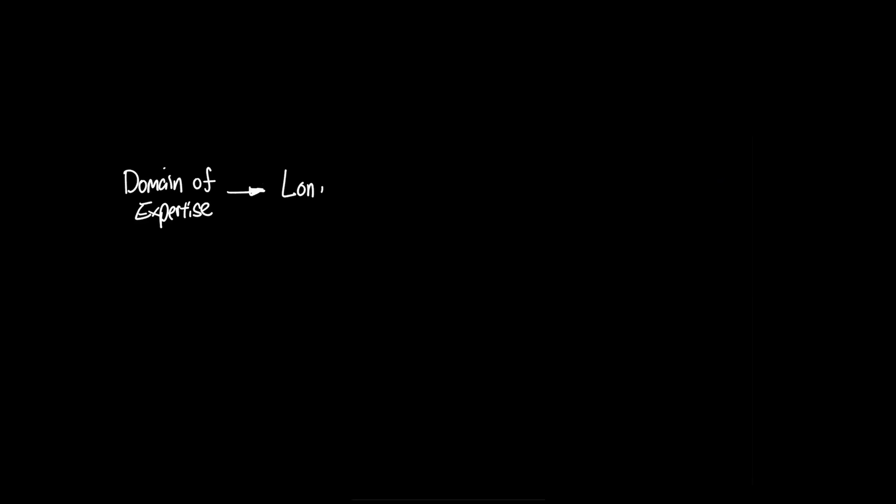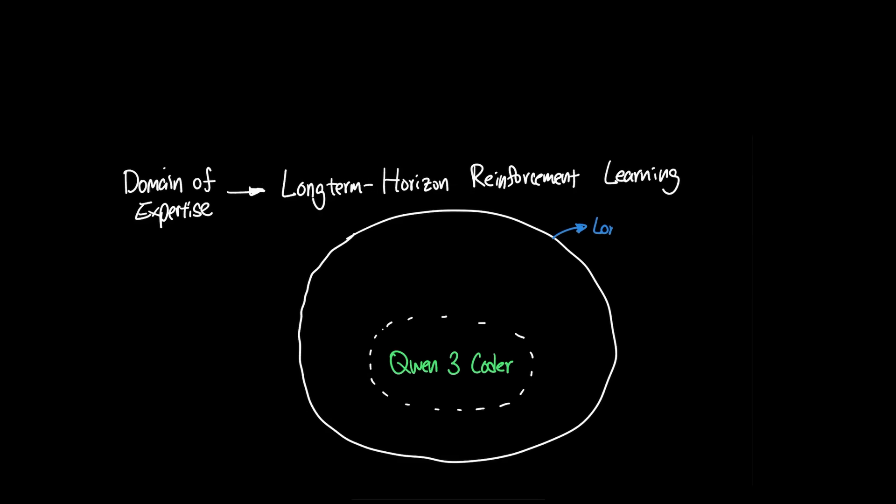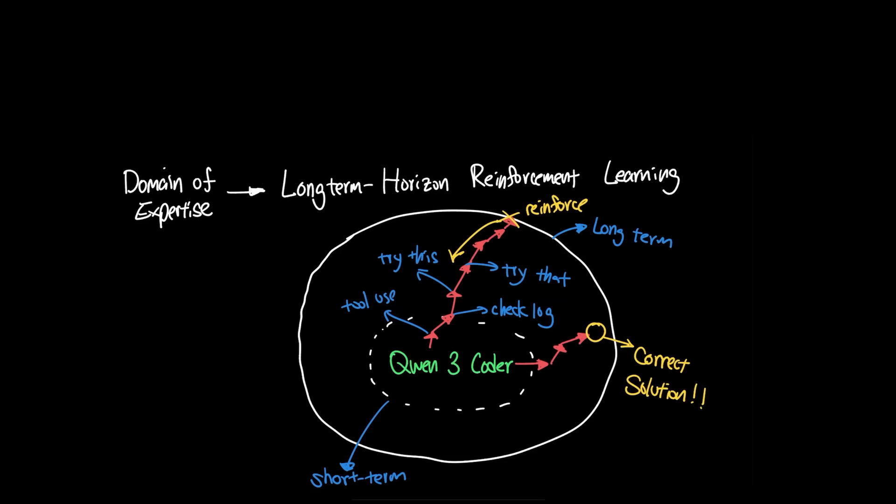Alibaba also doubled down on the importance of long horizon reinforcement learning, where you give the model a lot of leash in figuring out how to plan and use tools like checking the debugging log or error logs or any other intermediary steps to get to the actual final solution, which would be highly beneficial in the real world.